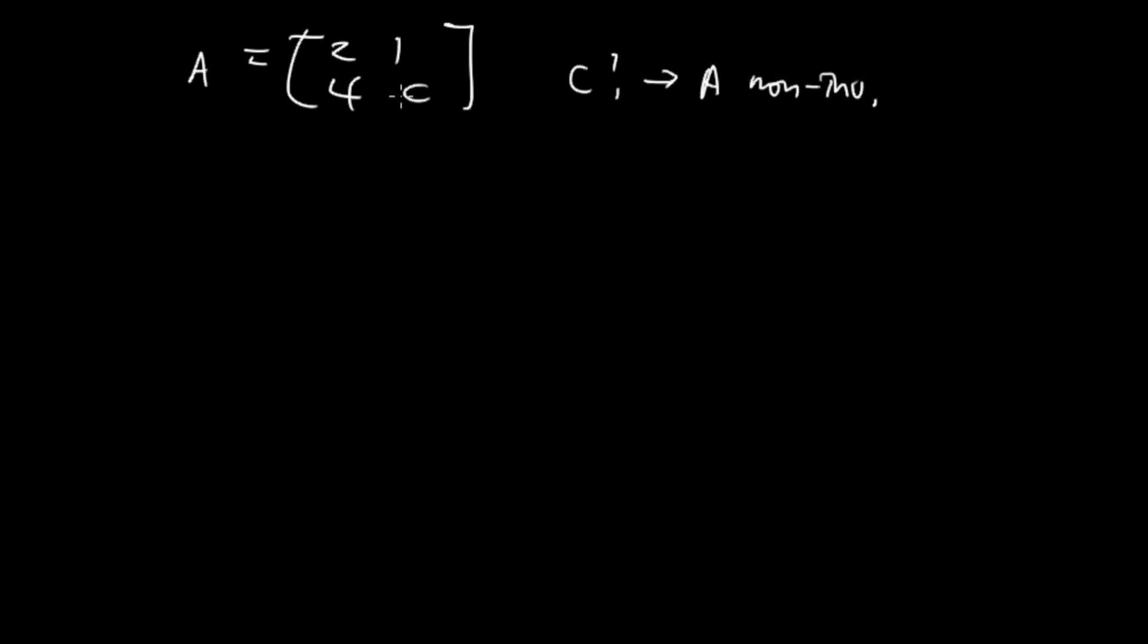Here we're trying to find a value C where the matrix A is non-invertible. For a matrix to be non-invertible, that means that when you try to row reduce, you are going to get a row of zero.